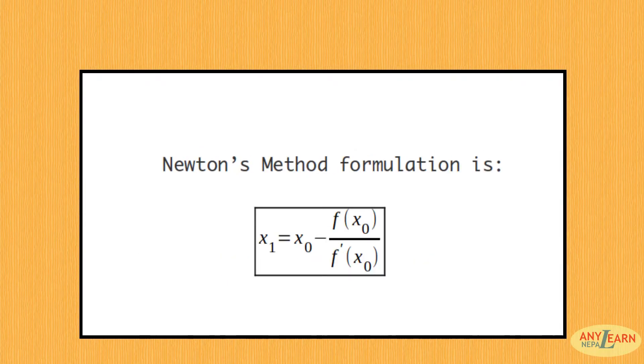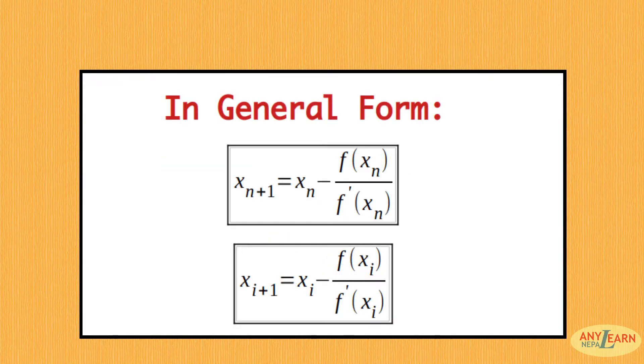Newton's method formulation is x1 equals x0 minus f(x0) by f'(x0). Or in more general form, we can write x(n+1) equals xn minus f(xn) by f'(xn), or we can write x(i+1) equals xi minus f(xi) by f'(xi).